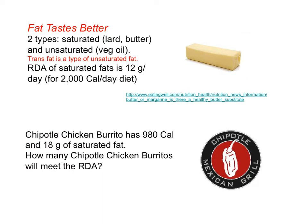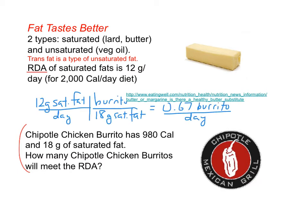Fats are classified as saturated fats and unsaturated fats. Saturated fats are solids, unsaturated fats are liquids. The recommended daily allowance of saturated fat is 12 grams per day, so stop the video and answer this question. We can get the answer by doing another conversion. When we set up our conversion, note that the grams of saturated fat cancel out, leaving us with two-thirds of a burrito per day.